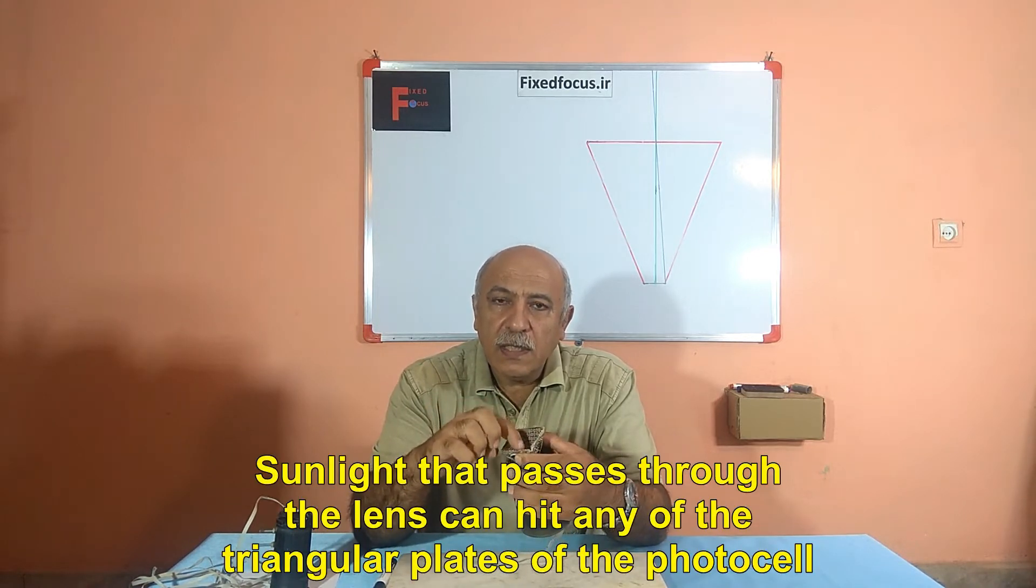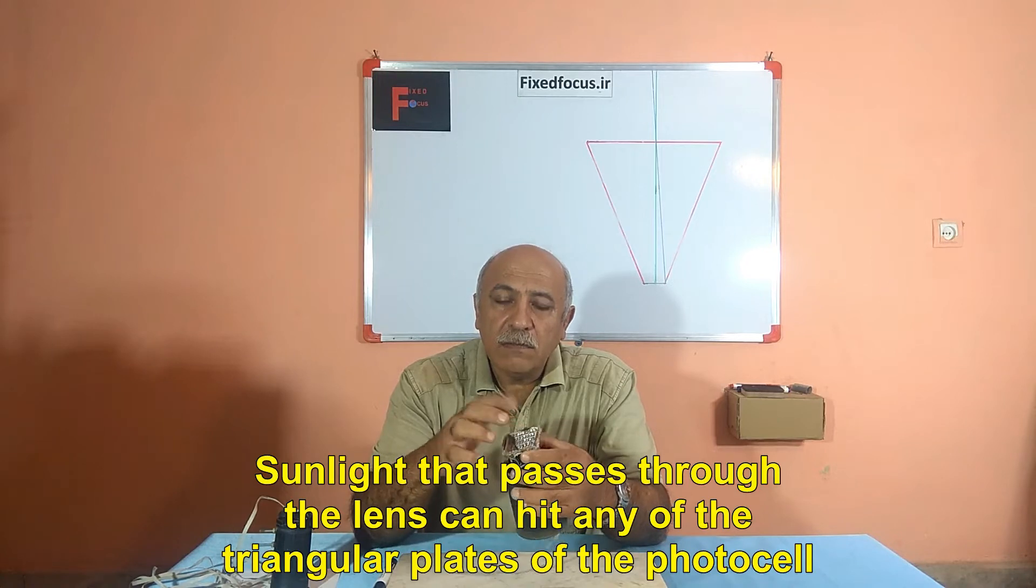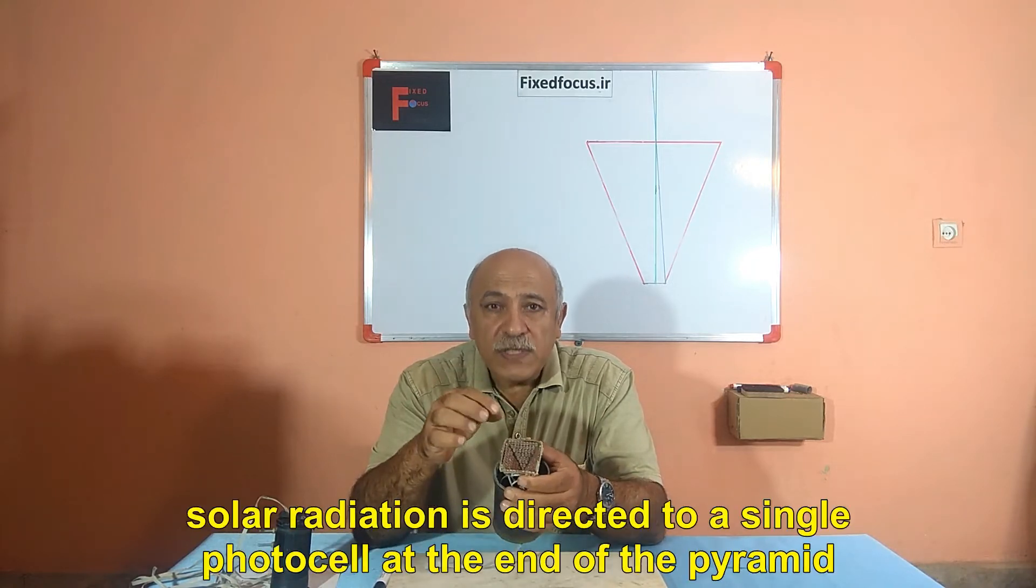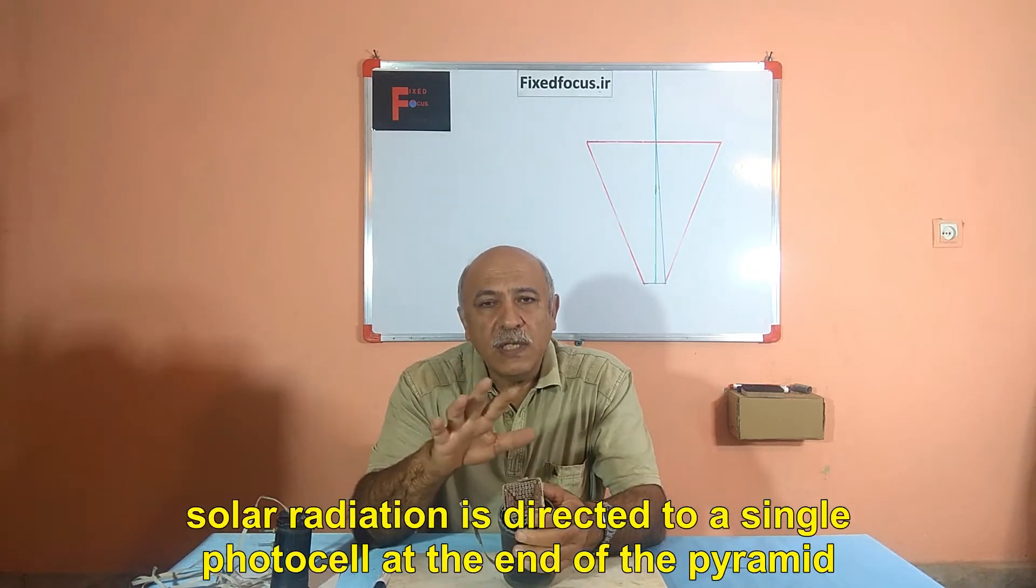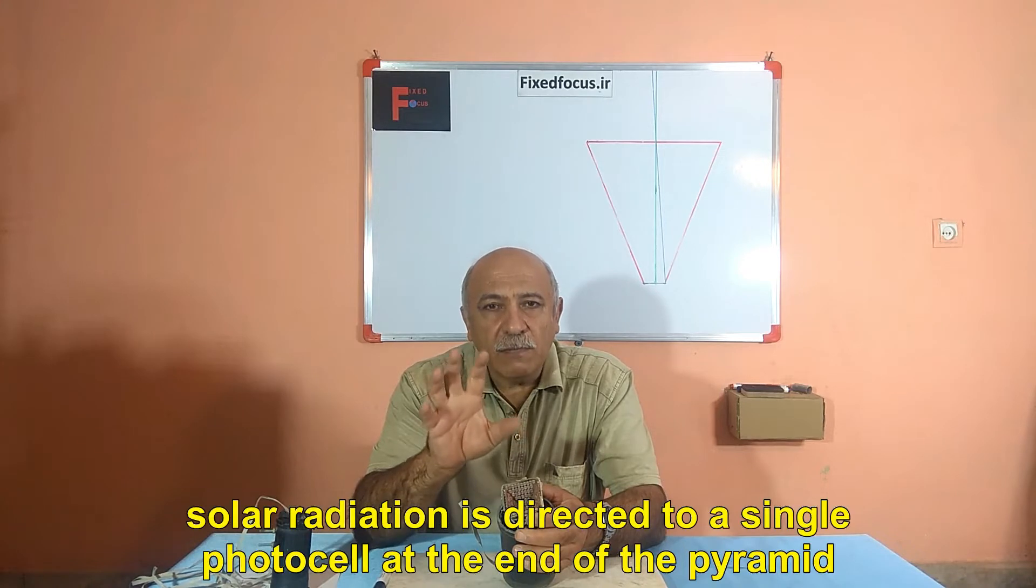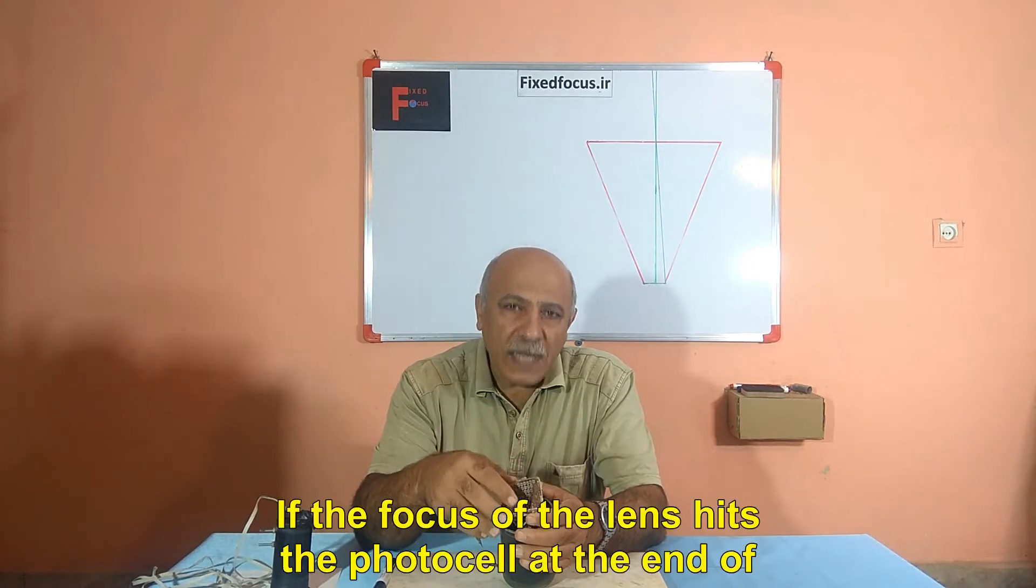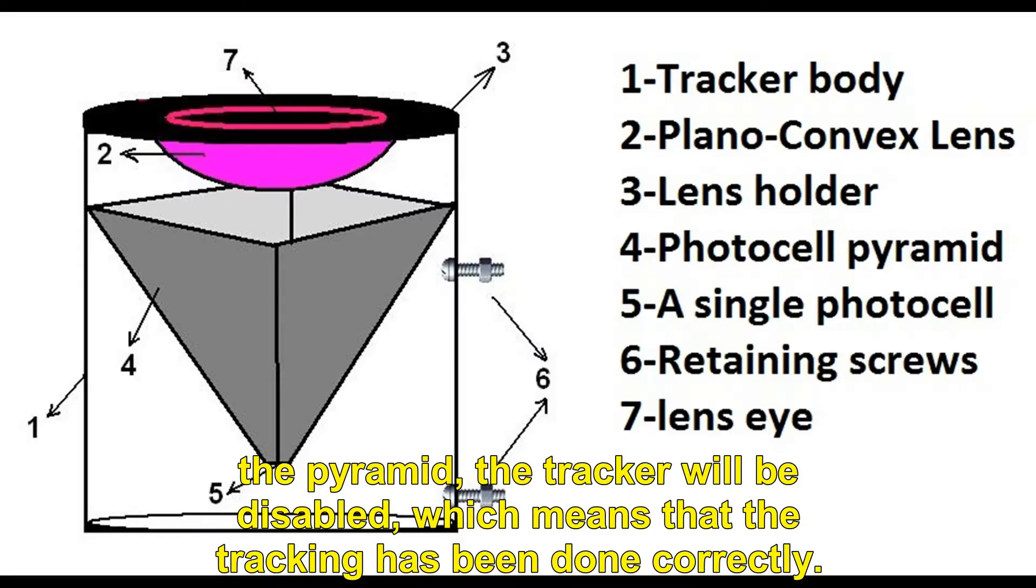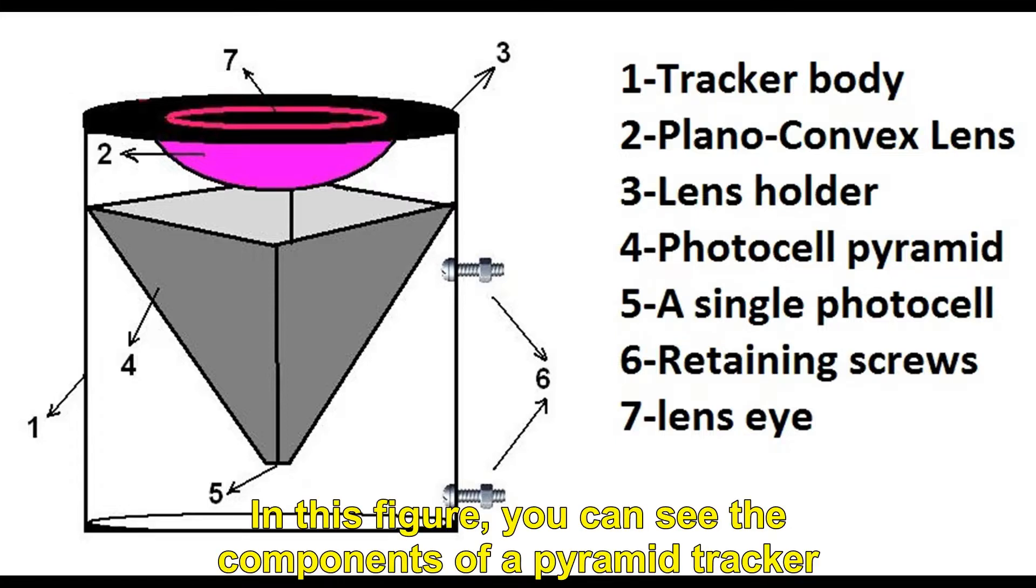Sunlight that passes through the lens can hit any of the triangular plates of the photocell. In this case, with the activation of the motors, the solar radiation is directed to a single photocell at the end of the pyramid. If the focus of the lens hits the photocell at the end of the pyramid, the tracker will be disabled, which means that the tracking has been done correctly. In this figure, you can see the components of a pyramid tracker.